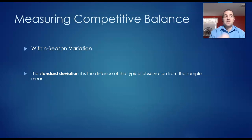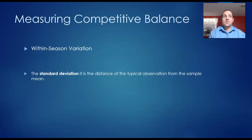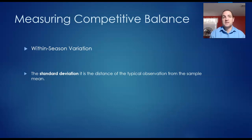If you look at professional sports and ignore ties, there is a loser for every winner. That means that if you take all teams, the mean winning percentage for a league must be 0.5, or 50%.